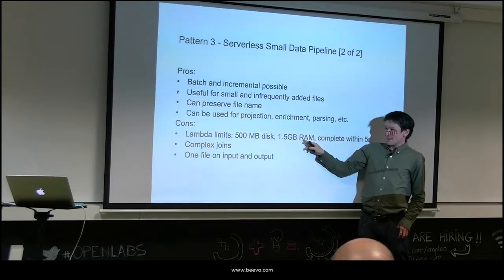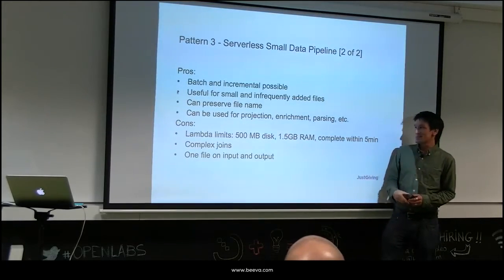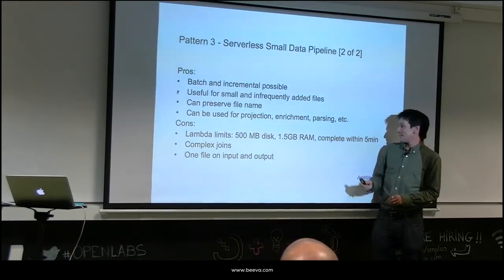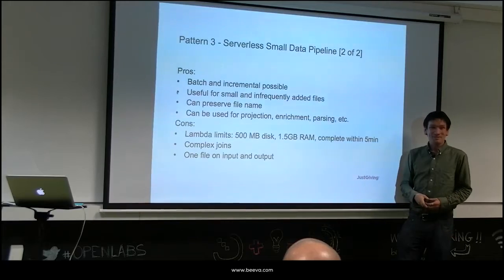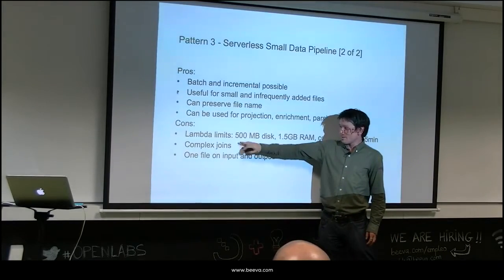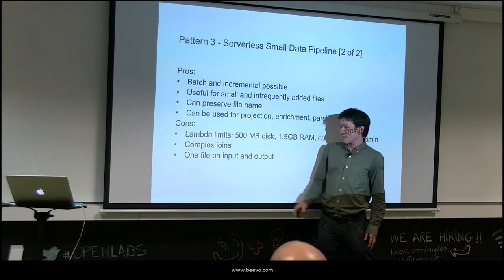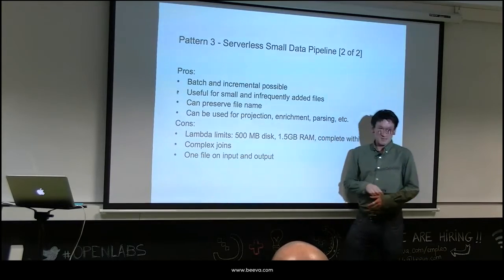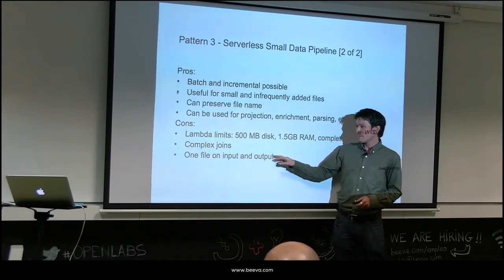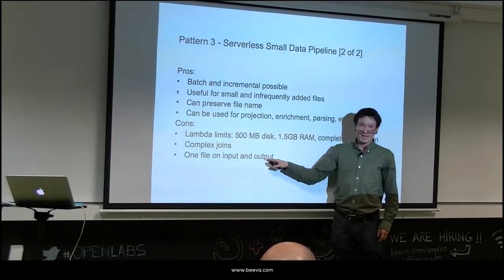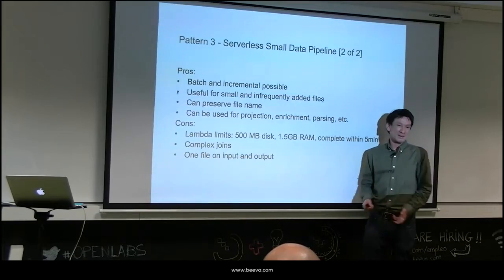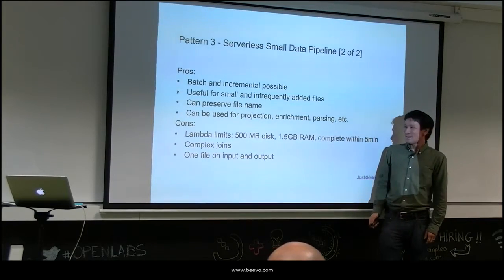You need to be aware of limits: files larger than about 400 megabytes are probably not recommended. The Lambda must complete within five minutes — if you're doing really heavy transformation, better to go to Spark or another process. You've only got access to one file at that point, which is a bit more complex for joins. If you have many files added per second you'll end up with lots of output files, which may not be desirable. In that case, you apply pattern four.